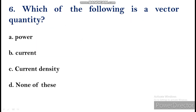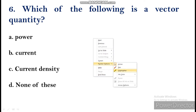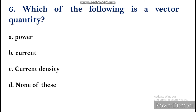The sixth question: which of the following is a vector quantity — power, current, current density, or none of these? Power equals energy divided by time; both are scalars, so power is scalar. Current equals charge divided by time; both scalars, so current is scalar. But current density equals sigma times E, where E (electric field) is a vector, and scalar times vector is a vector. So current density is a vector quantity — option C.